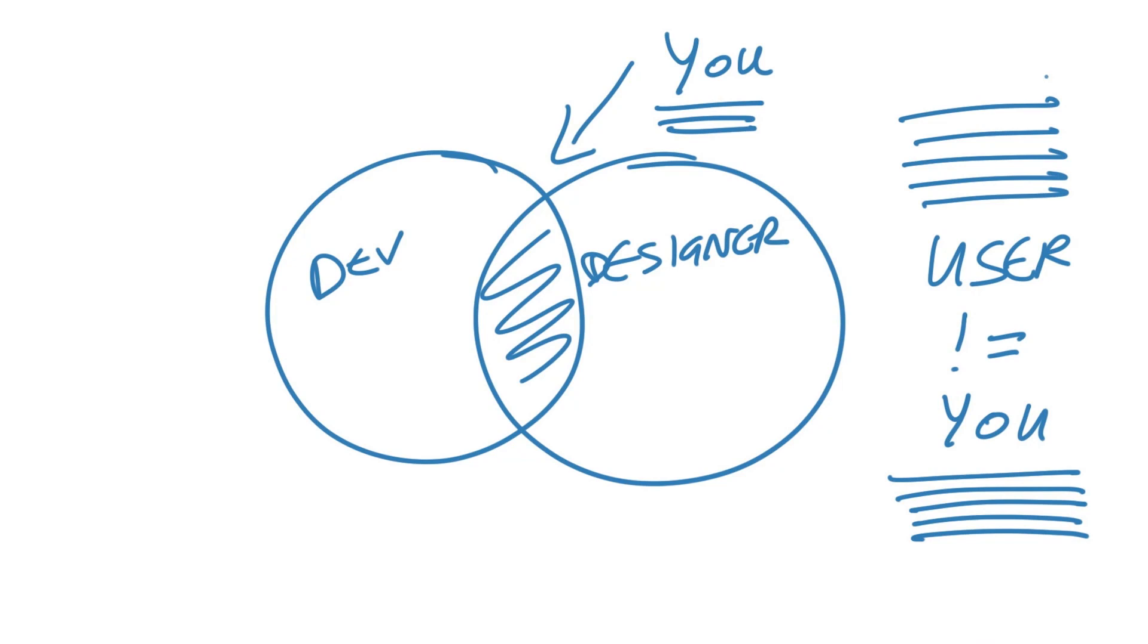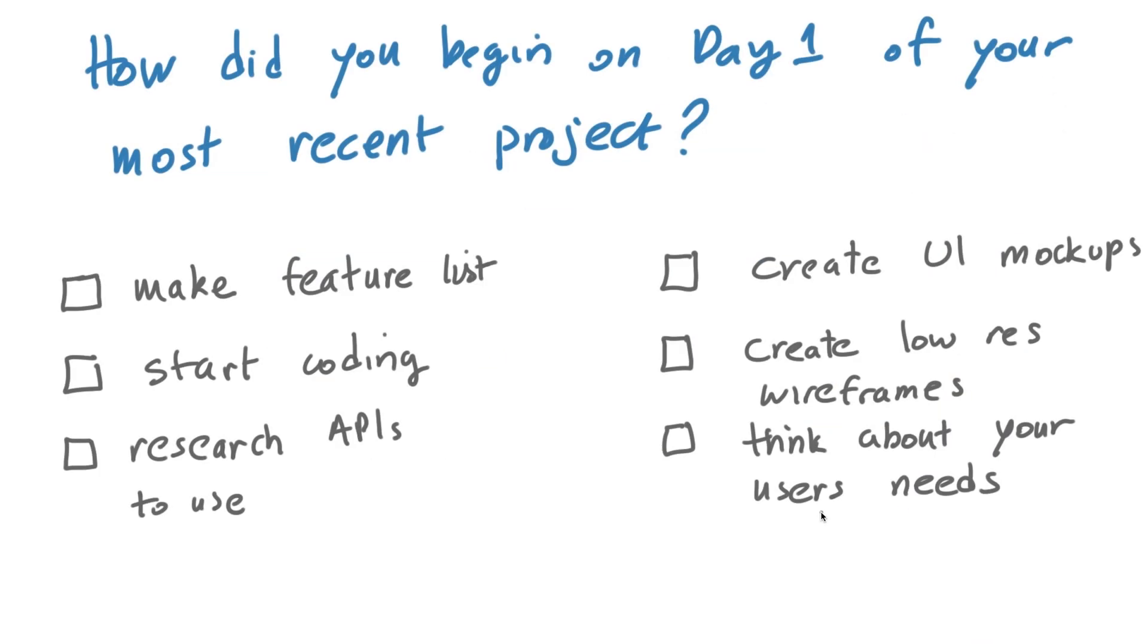Now that we've discussed approach bias, think about the most recent project that you worked on. Think about what you did on day one or how you first approached this project. Did any of your approaches actually bias the final product?